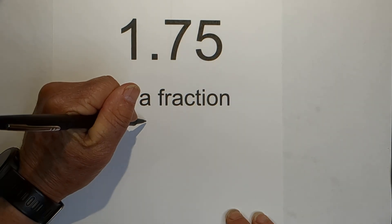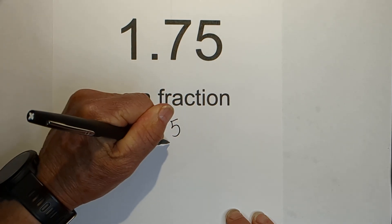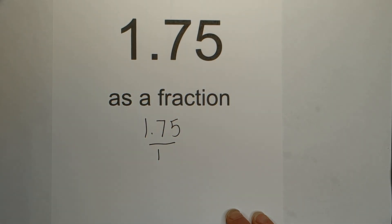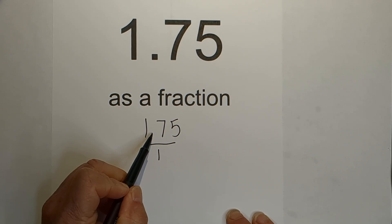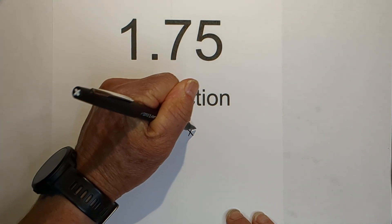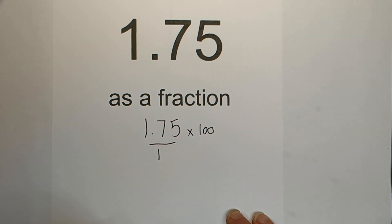Let's begin by writing 1.75 over 1. Next, what we need to do is multiply it by something to move the decimal all the way to the right. So we need to move it 1, 2 places, and we can do this by multiplying it by 100.